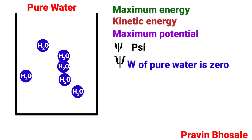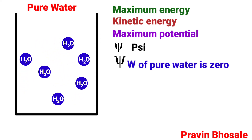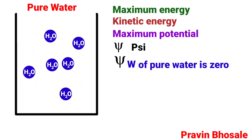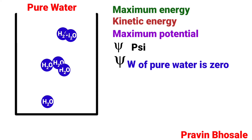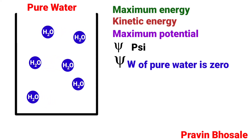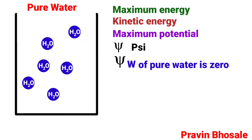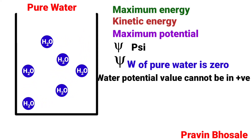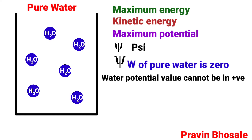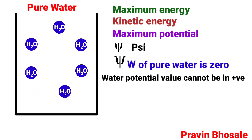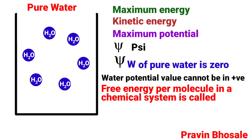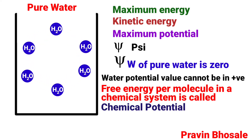Water potential of pure water is zero — meaning with maximum potential and maximum energy, the water potential of pure water is zero under zero pressure. Since there is no obstruction, water potential value cannot be positive for pure water. Free energy per molecule in a chemical system is called chemical potential, and chemical potential is water potential.